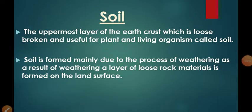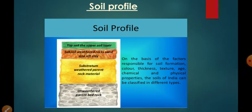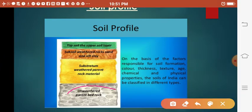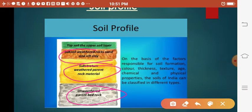Let's begin with soil. Soil is the uppermost layer of the earth's crust which is loose, broken, and useful for plants and living organisms. You may observe this in the soil profile: unweathered parent rock, weathered parent rock, subsoil, and the upper layer we call soil. This soil is not only for plant growth — in fact, one handful of soil contains a number of microorganisms equal to the total number of people on the globe.